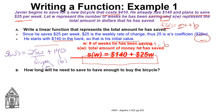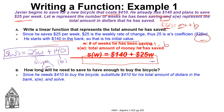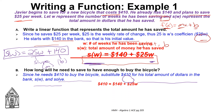We've written that equation or function — either form works. Now let's look at part B. It says: how long will he need to save to have enough money to buy the bicycle? Since he needs $410 to buy the bicycle, we substitute 410 for S(W) — the total amount of dollars he needs — and we replace S(W) with 410.